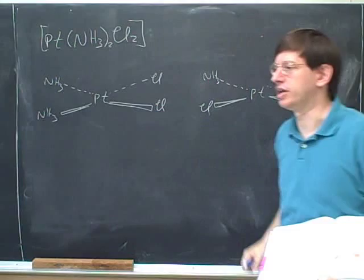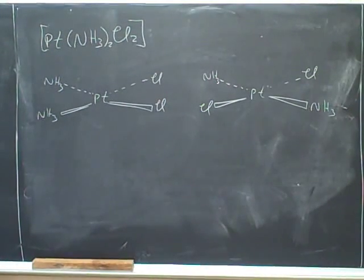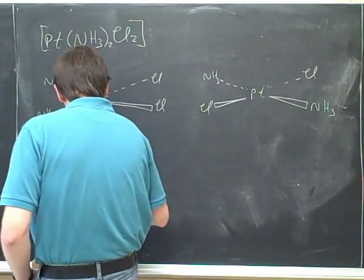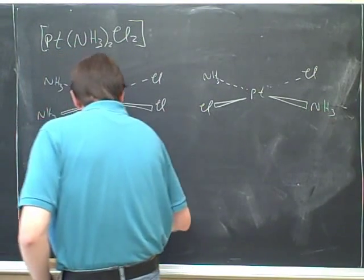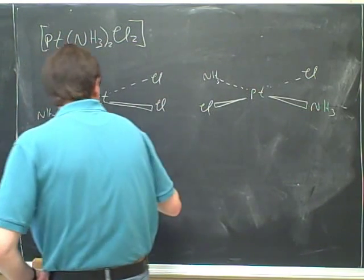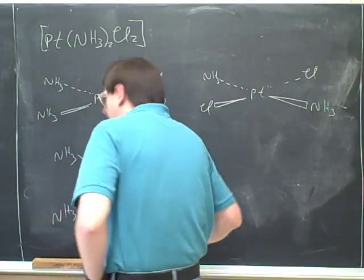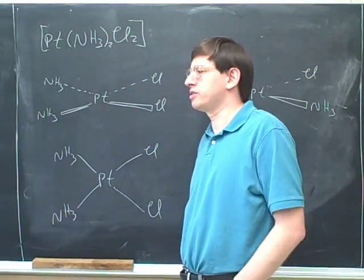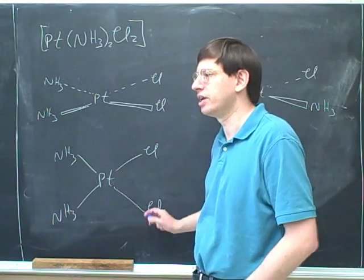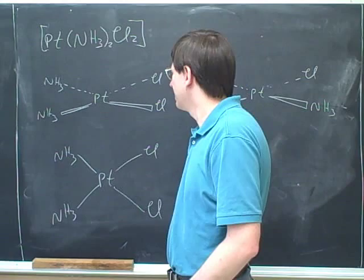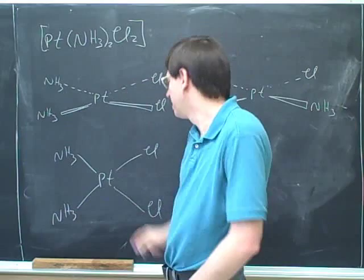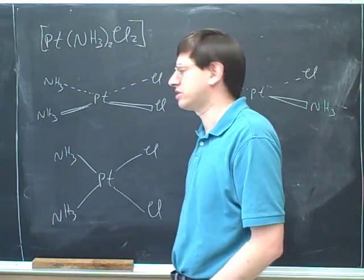So here's one way to draw the two isomers. By the way, remember that as far as square planar is concerned, you could draw either of these two ways. You could put all the corners of the square in the plane of the board. But in the textbook, this actually seems simple, but the textbook tends to do it like this. So I'm going to follow that pattern using the wedges and the dashes.